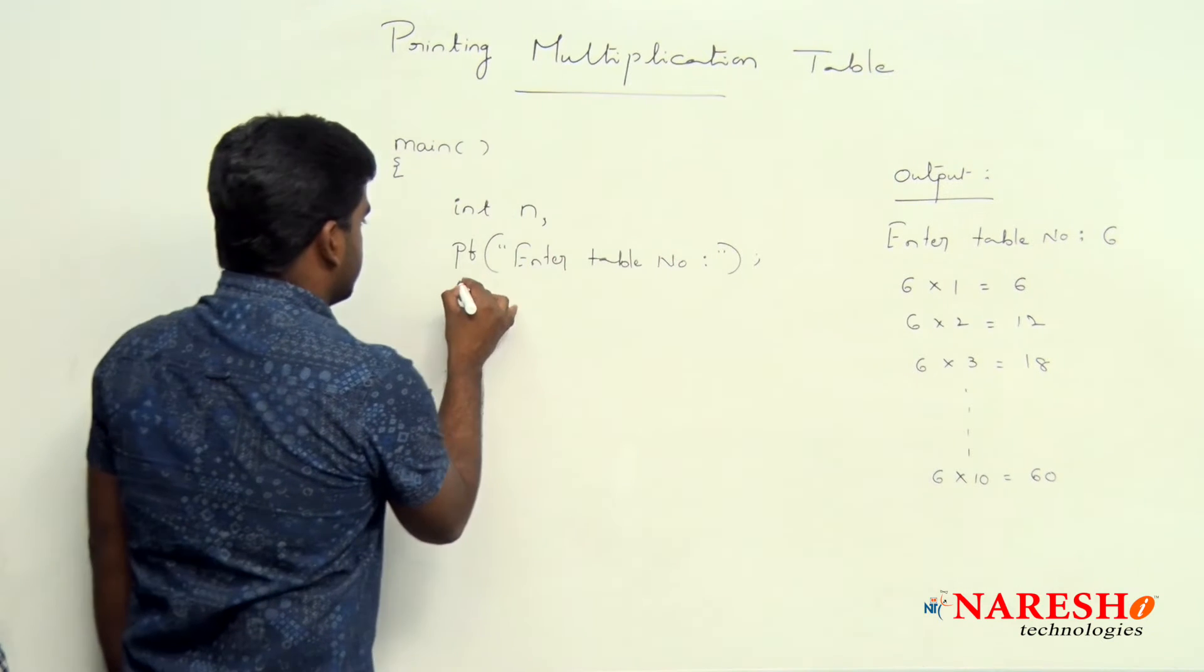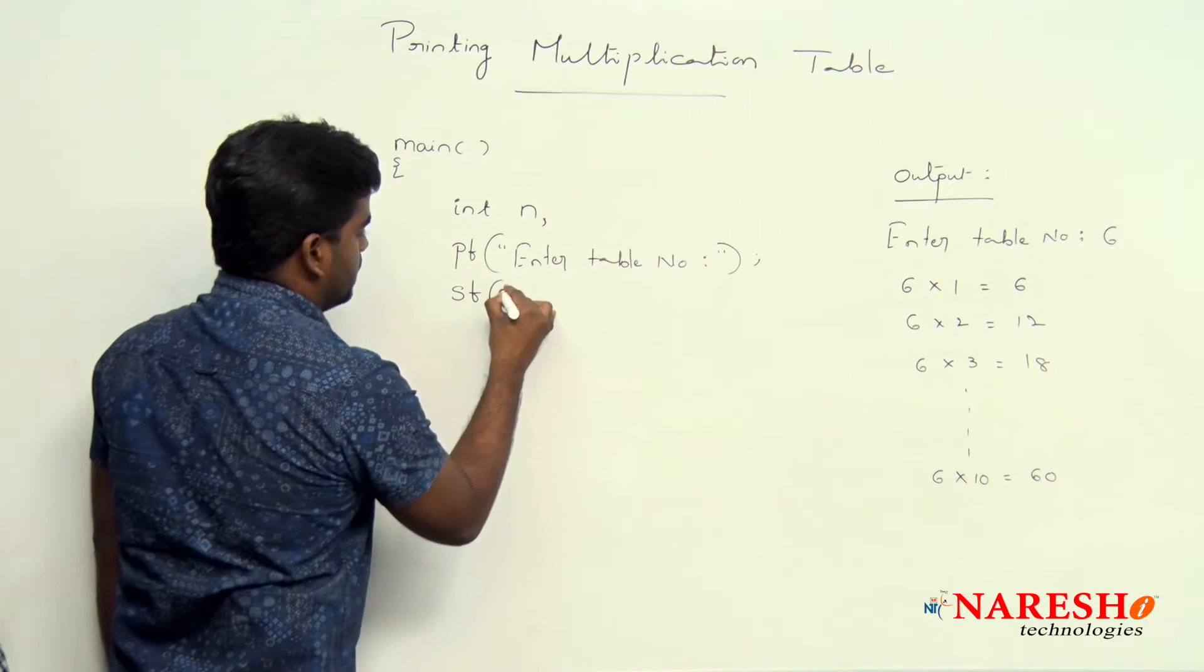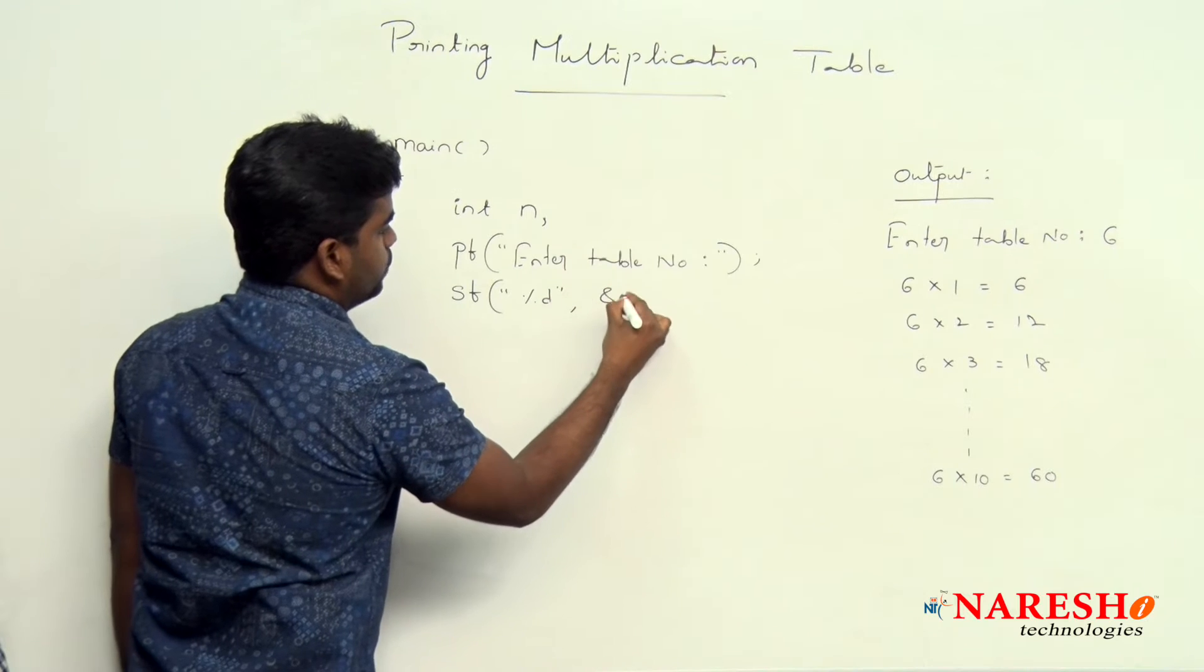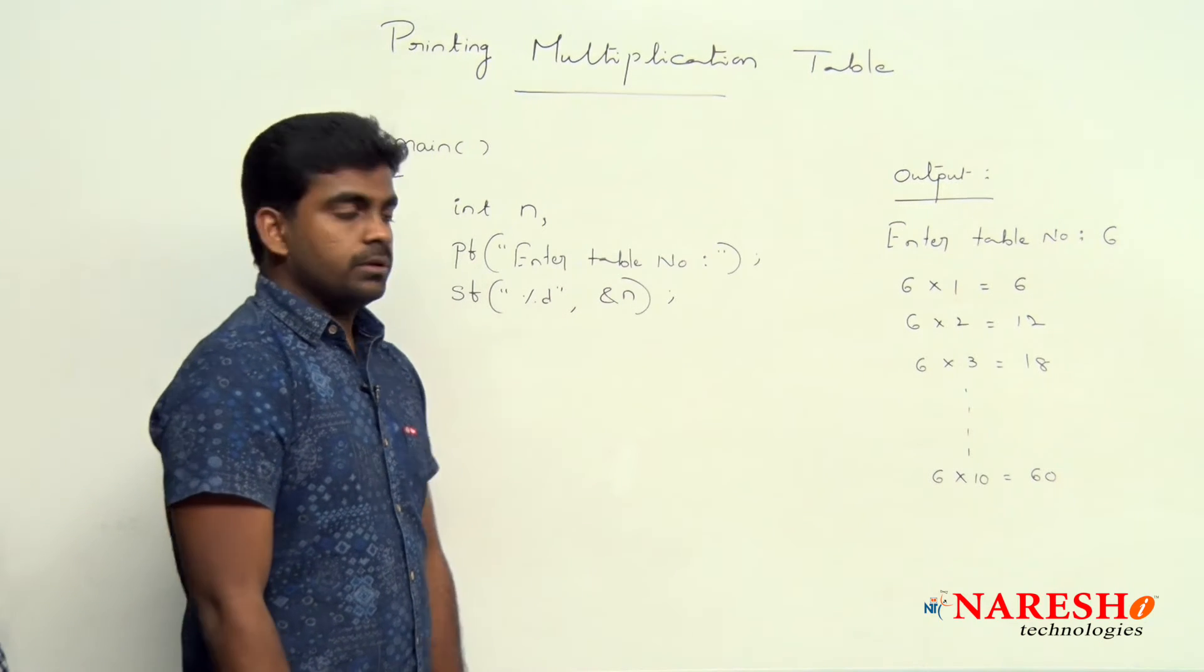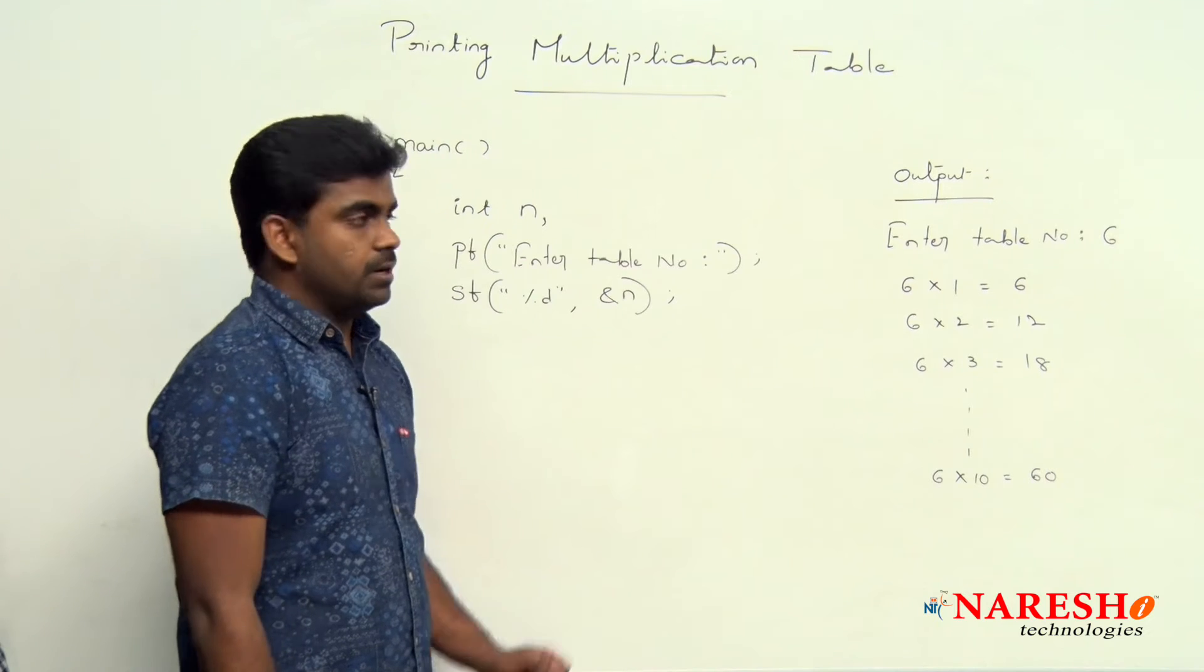Whatever the number they input here, that we are collecting into n using percentage d. Into n we are collecting. Now suppose n is 6.